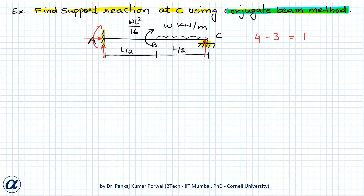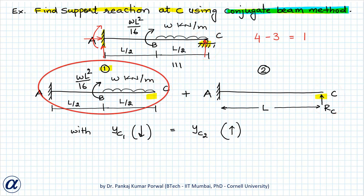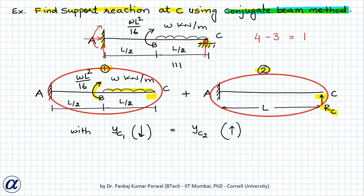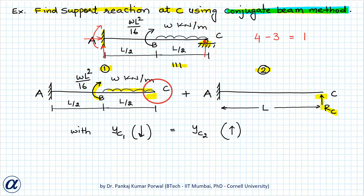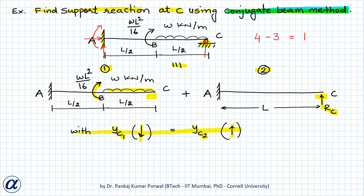To solve this using the conjugate beam method, we break the structure into two parts with the same geometry as the given structure, except we remove the roller support at C. In structure one, we apply all the original loading — concentrated moment and UDL. In structure two, we apply a vertical reaction force RC in place of the support at C. Superposition of the two structures is equivalent to the original if the vertical displacement of point C in structure one (yc1, downward) equals that in structure two (yc2, upward). This is the compatibility condition.